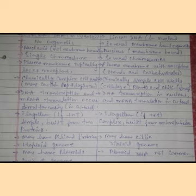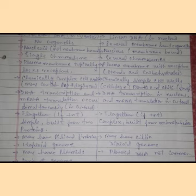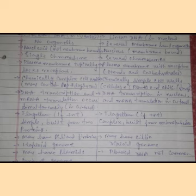Regarding flagella: in prokaryotes, if present, flagella are simple and built from two kinds of proteins. In eukaryotes, if present, flagella are complex and built from microtubules.